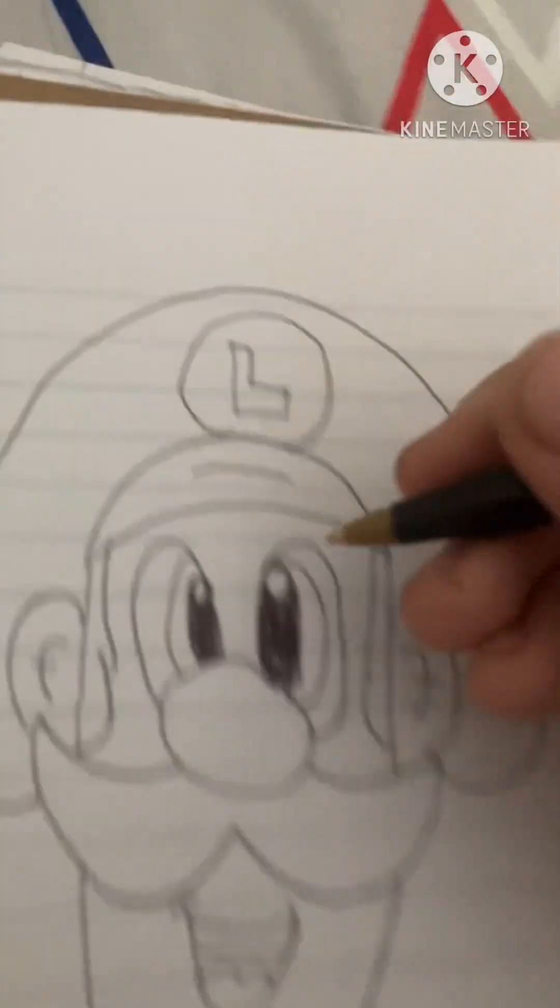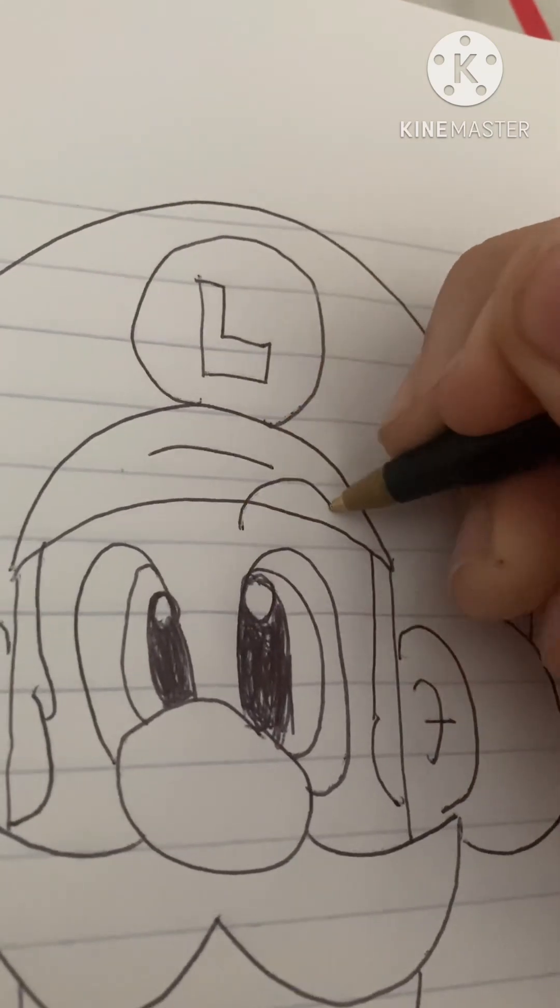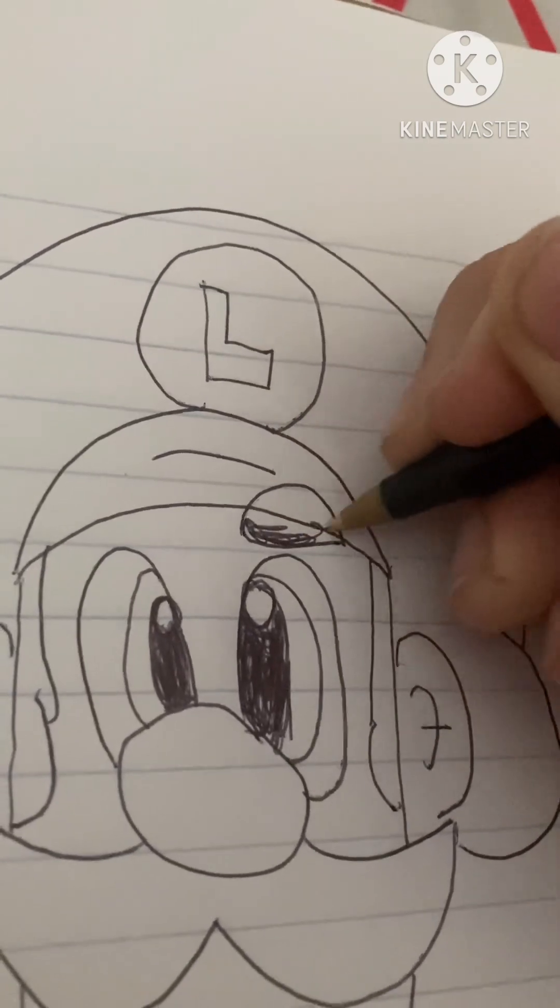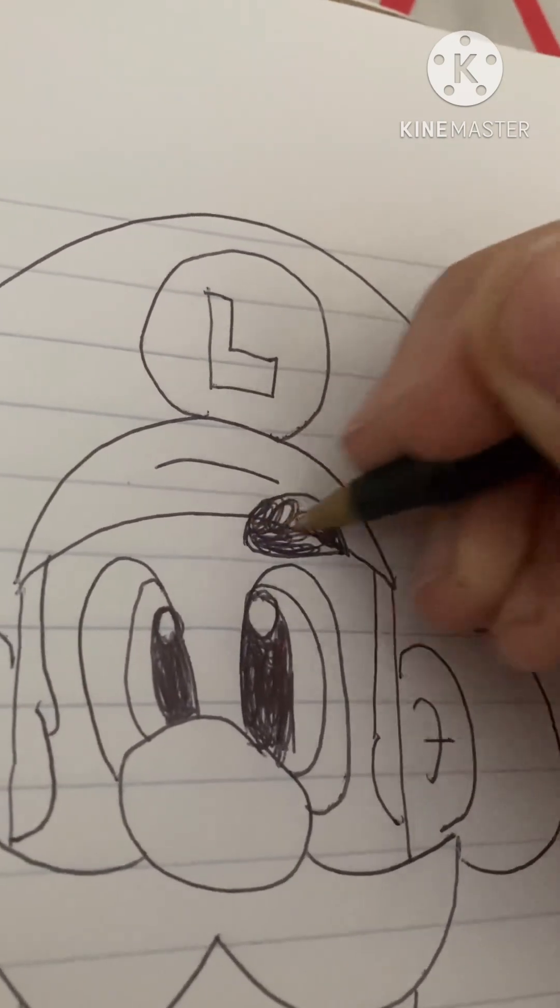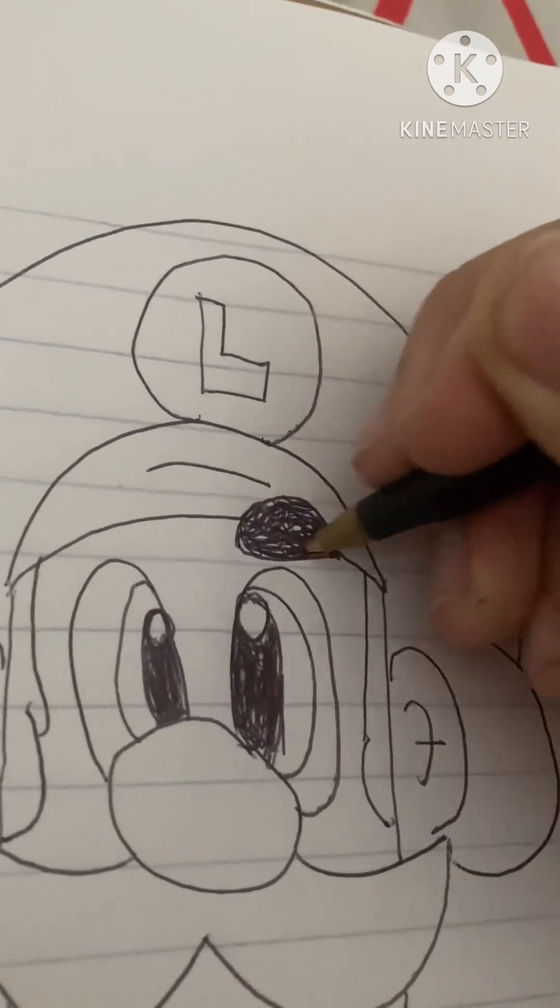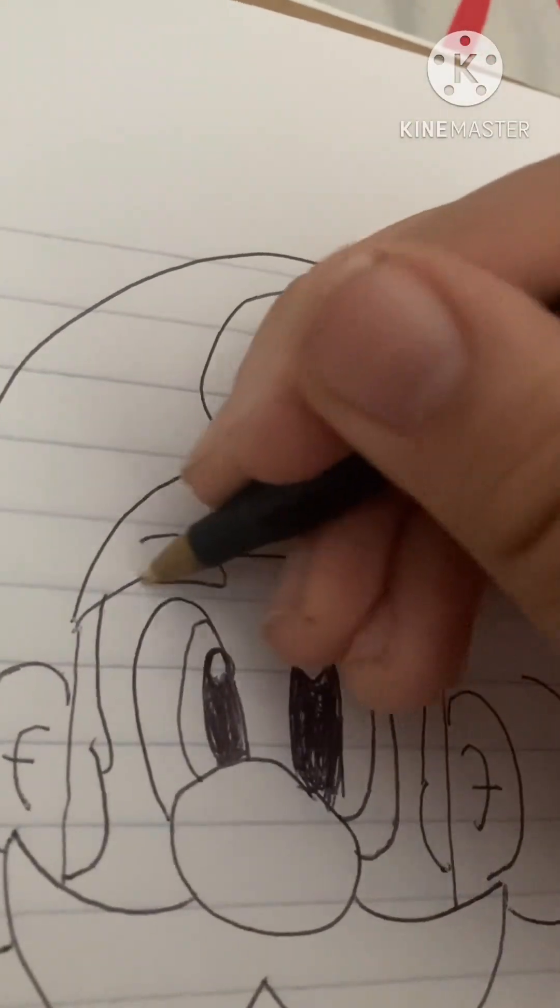That's for his head. And now, oh I forgot to do the eyebrows. So now we're gonna go up, down. Sorry for the overlapping, but you could do overlapping in this drawing if you're just going to use a pen or pencil. And do the same thing here.